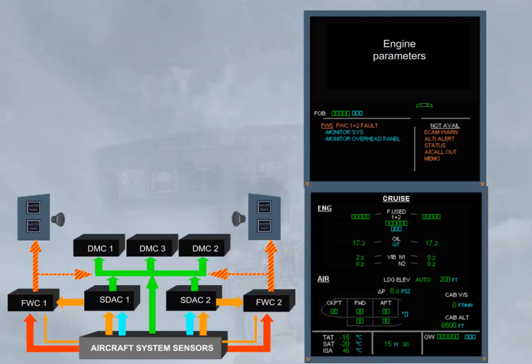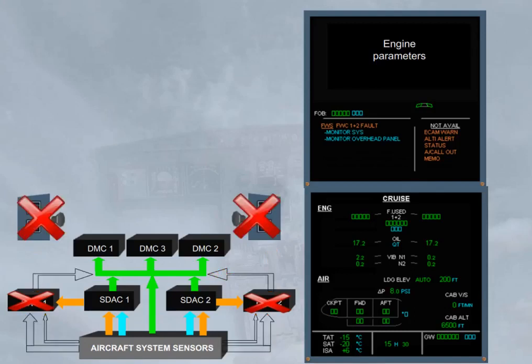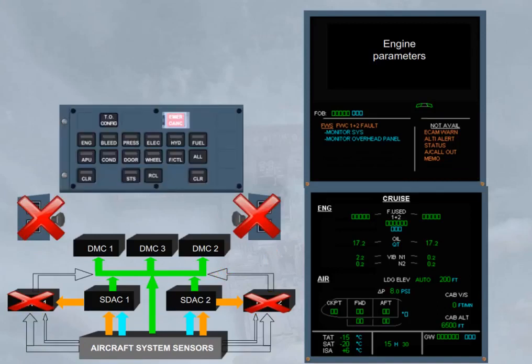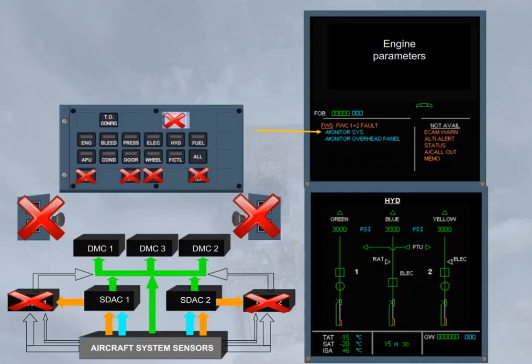When both flight warning computers have failed, all alarms, oral and visual, are lost, as confirmed on the right side of the engine warning display. On the ECAM control panel, only the system keyboard is available to monitor a related system. Notice that if a system is selected, the related key will not be lighted. Monitor also the overhead panel to detect a fault.